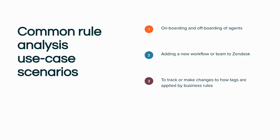The next most common use of the rule analysis feature is when establishing a new workflow or adding a new team to Zendesk. Let's say you have an internal HR-based use case and the compensation team is also going to be joining your instance. Perhaps previously frontline HR reps might have been fielding and forwarding compensation requests via email, but now that the compensation team is part of Zendesk, we want to make sure we're able to separate and ensure that tickets meant for the compensation team are routed to the compensation team without disruption to your frontline HR reps. Identifying and evaluating these business rules will become extremely important to ensure a smooth addition and alteration of workflows for both existing and new agent teams.